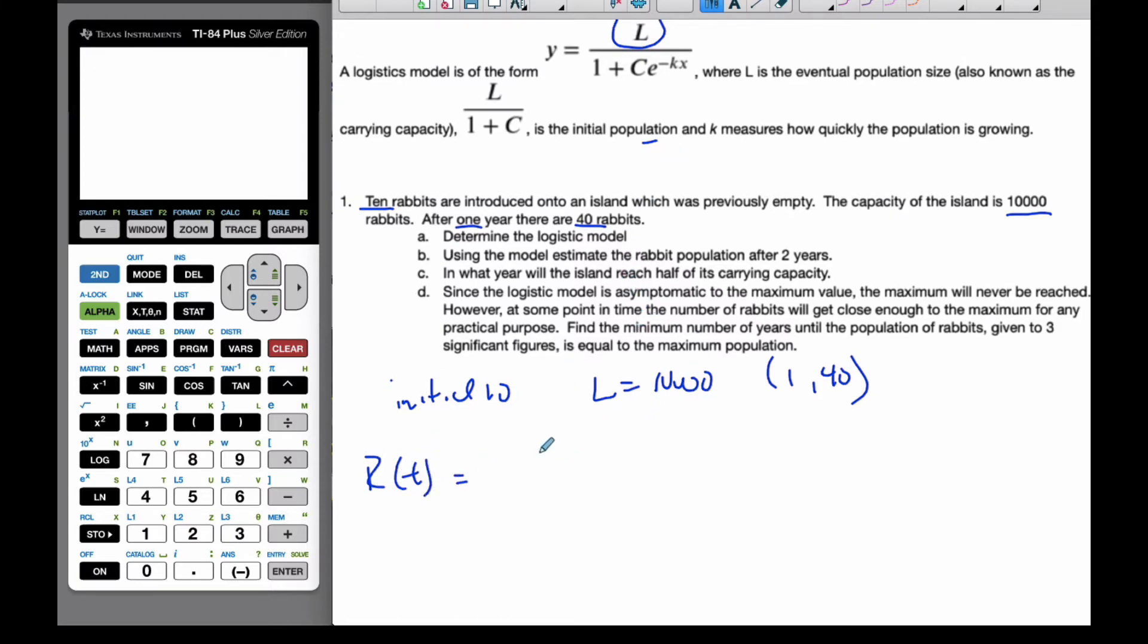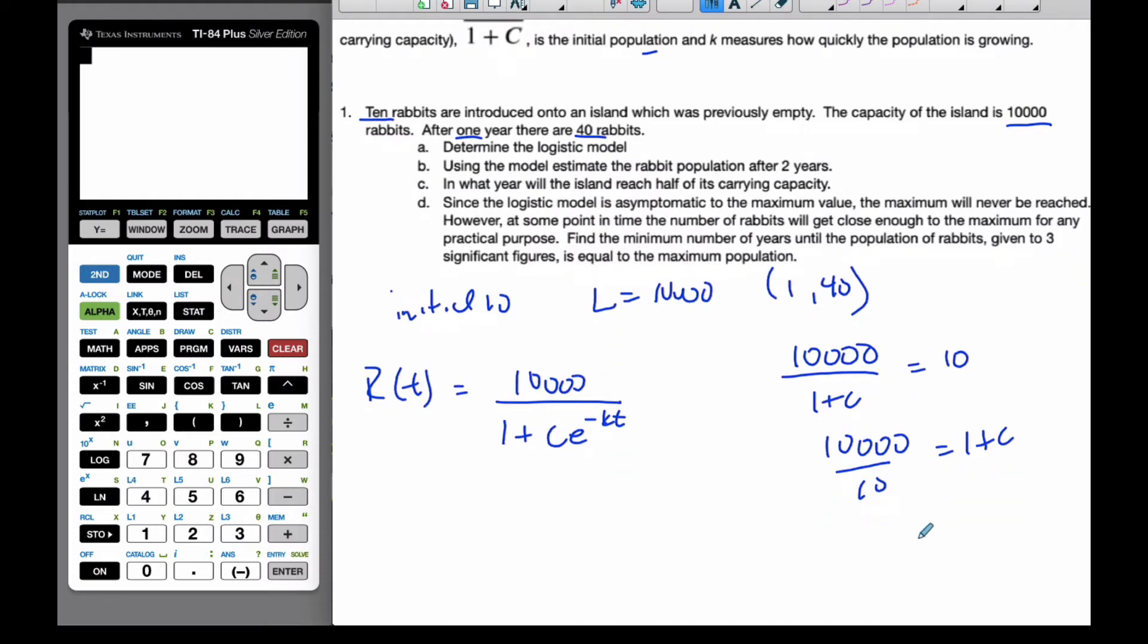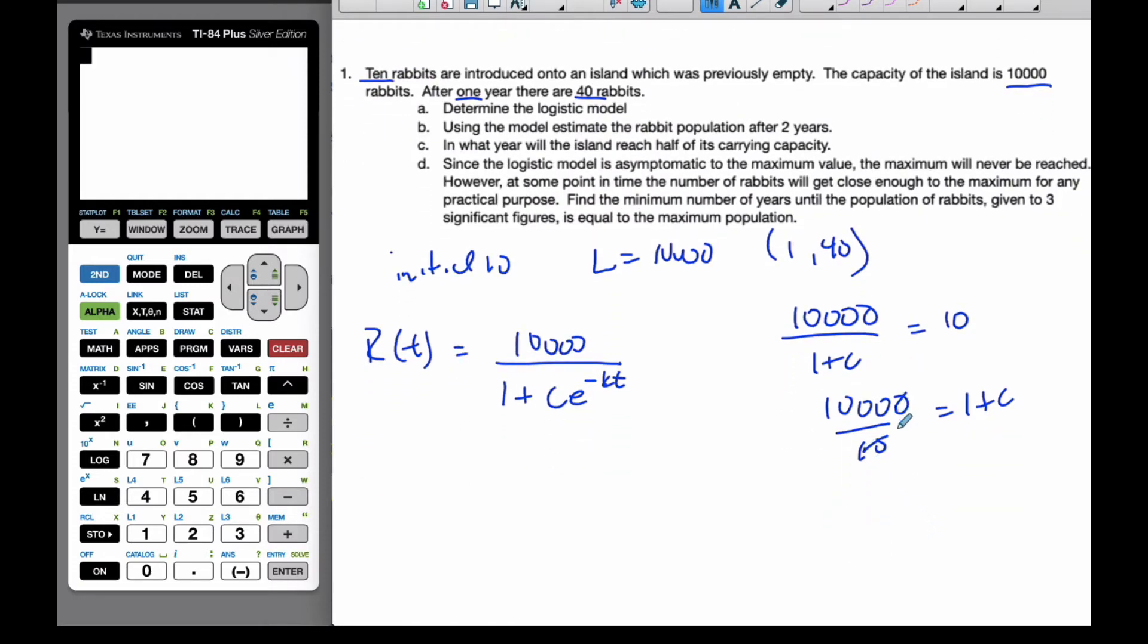Well, L, I know, is going to be 10,000, because it's the limiting value, over 1 plus C E to the minus K T. Well, if I know 10 rabbits were introduced, to find my initial value, I take this part of the equation, equaling it up to 10. Algebraically, I can switch these two. And I recognize that this is going to be 1,000, subtract 1, I get C to be 999.